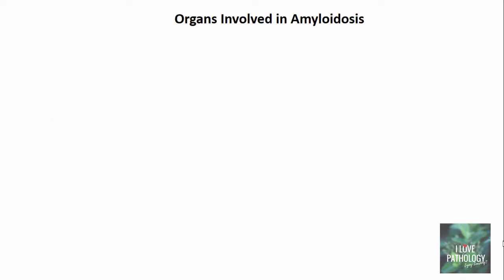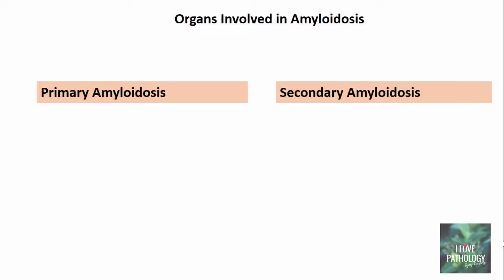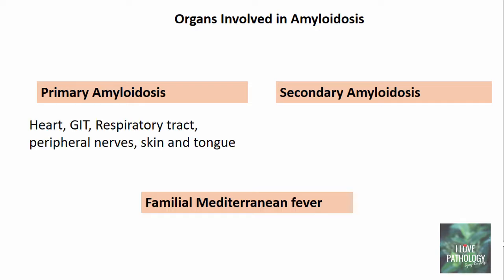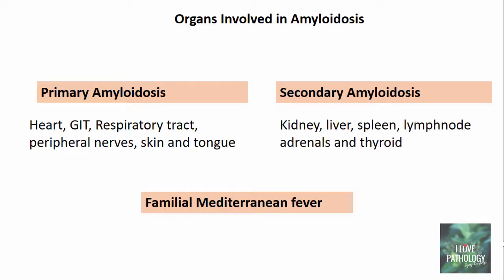Now let us understand what organs are involved in each different type of amyloidosis — primary amyloidosis, secondary amyloidosis, and familial Mediterranean fever. In primary amyloidosis, the organs involved are the heart, the gastrointestinal tract, the respiratory tract, the peripheral nerves, skin, and tongue. In secondary amyloidosis, the kidney, liver, and spleen are more commonly involved, followed by lymph nodes, adrenals, and thyroid.